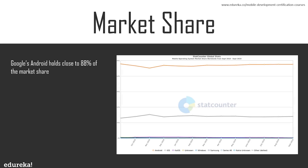Talking about market share, Google's Android holds close to 88% of the market share, which might seem like a better choice. But can you ignore the high monetization prospects that Apple's iOS platform offers? One simple solution would be to develop for both platforms simultaneously, but one major drawback is that every company does not have a budget for it. Android is essentially free of cost — you can just go to the Play Store and download apps.